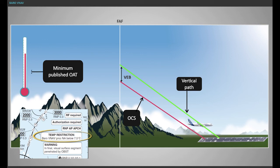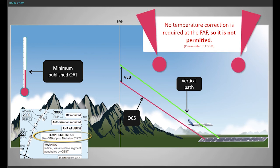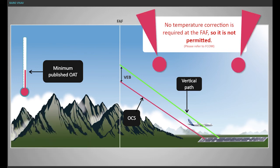In case of low temperature, still above the minimum published outside air temperature, obstacle clearance is taken into account by procedure design, the VEB. Thus, no temperature correction is required at the final approach fix.